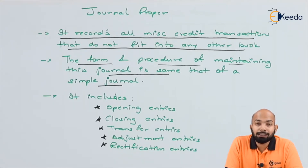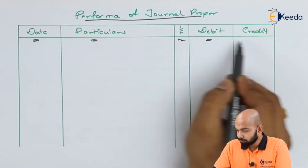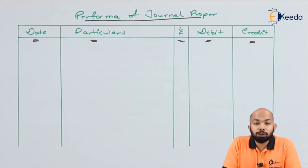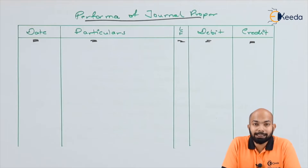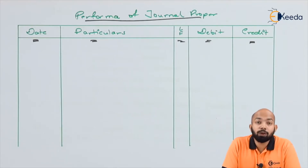Let's go ahead and see the illustration. The proforma of journal proper is very similar to how we journalize transactions — that means date, particulars, LF, debit amount, and credit amount. Hence the proforma and procedure is very similar to all the journal entries we have passed when we studied about recording journal entries.